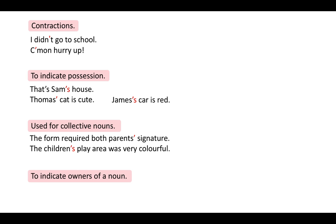A semicolon is similar to a full stop. Therefore, instead of a full stop we can use a semicolon. However, generally we use a semicolon when two sentences are closely related. So a semicolon connects independent sentences that are related. For example: 'London is a famous city; there are many places to visit.'